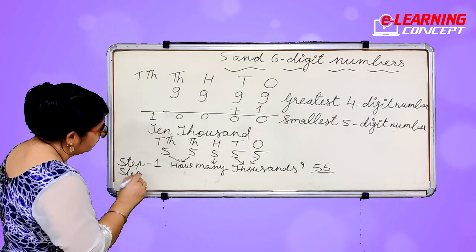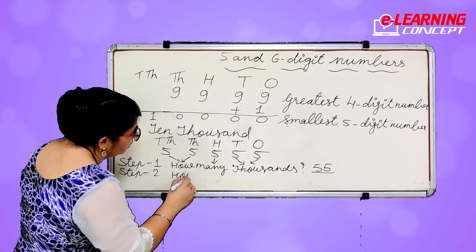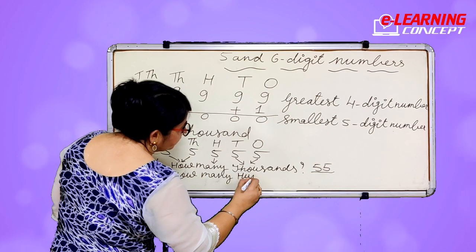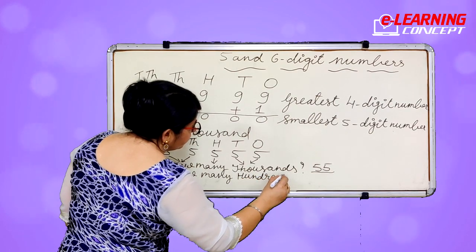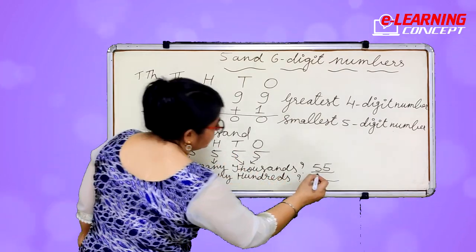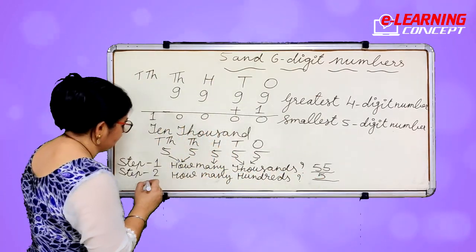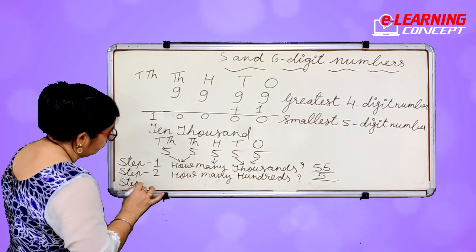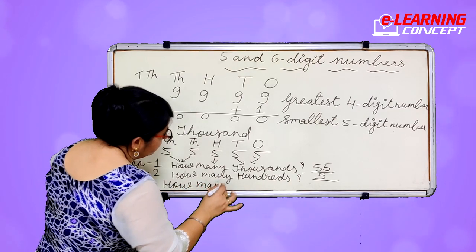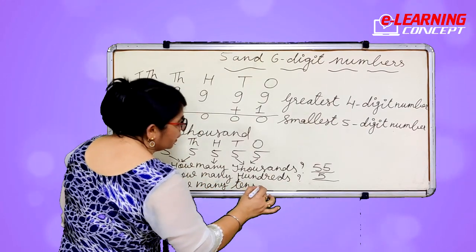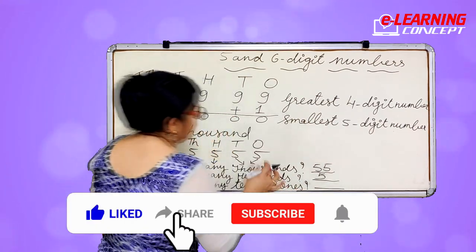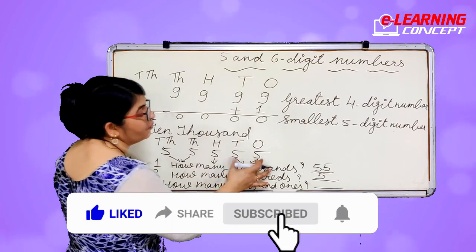Step 2: how many hundreds? H means hundred. This is also 5, so 5 hundred. Step 3: how many tens and ones? Tens and ones come together — this is 55.